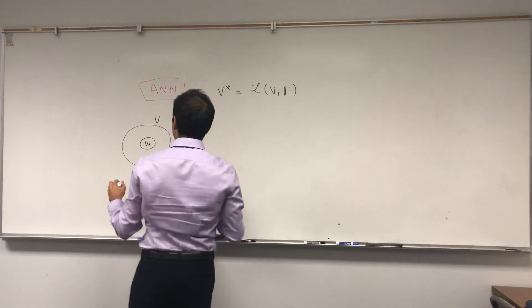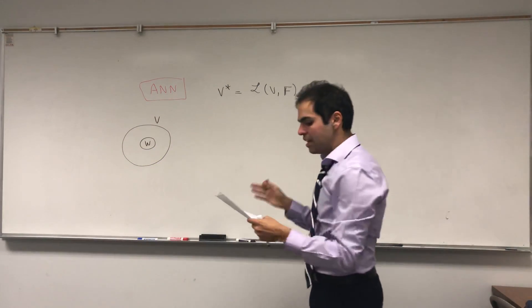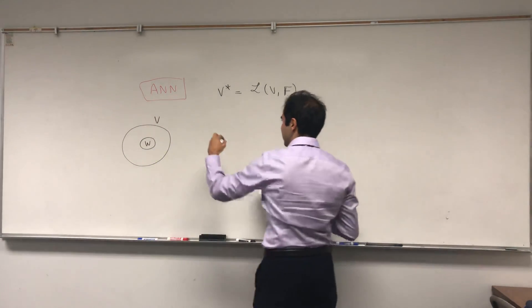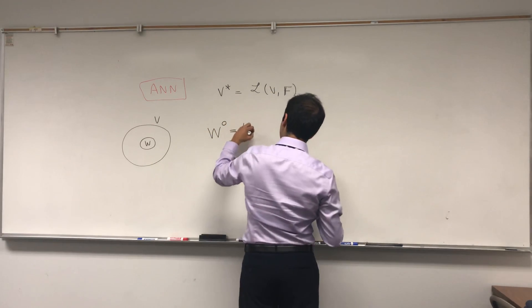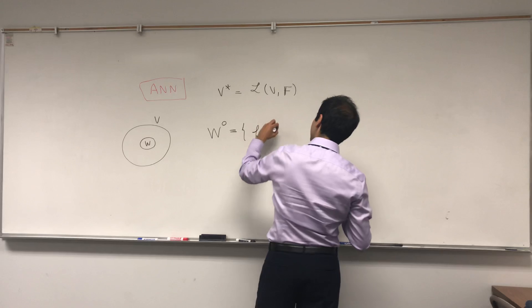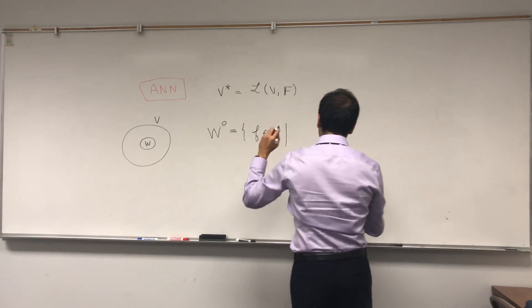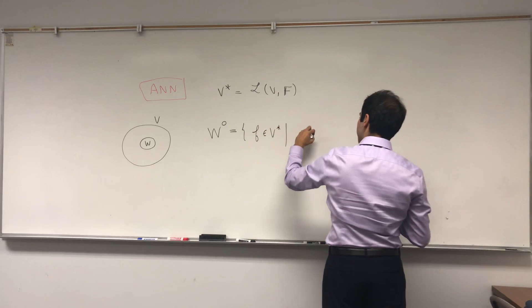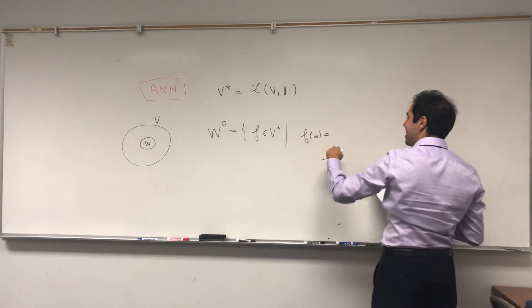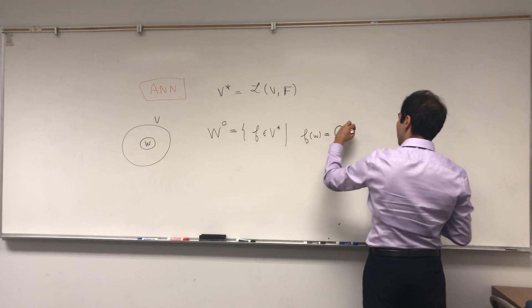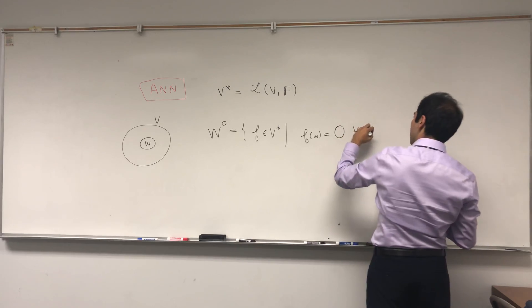So suppose you have a subspace W of V. Then what is the annihilator, called W naught? It's just the set of functions in V star that are zero in W, which literally annihilates your W. So f(W) equals zero for all w in W.